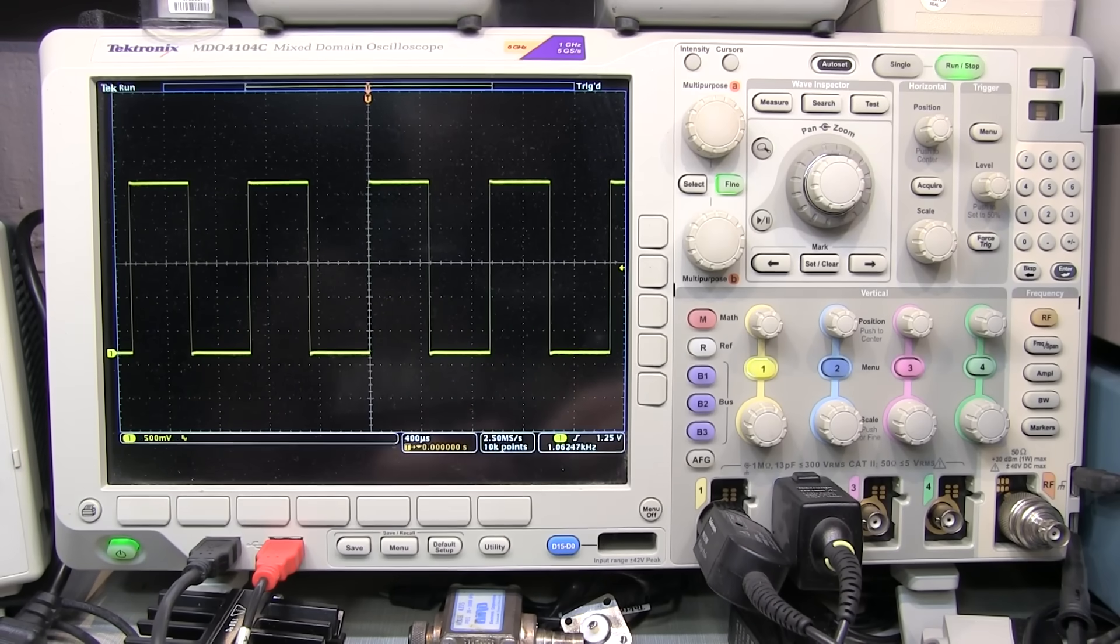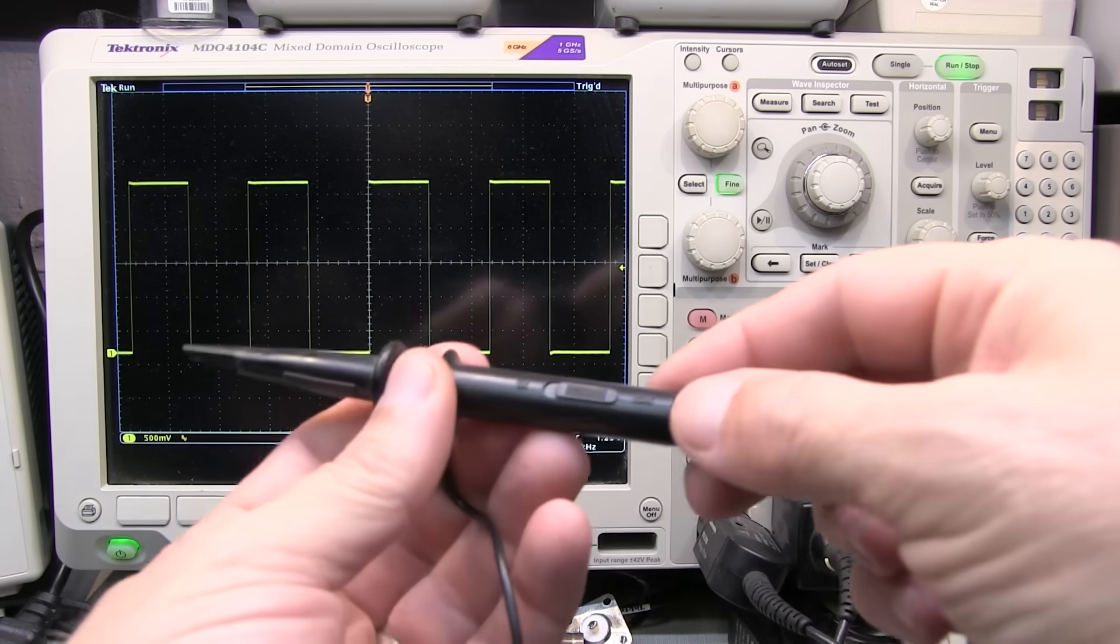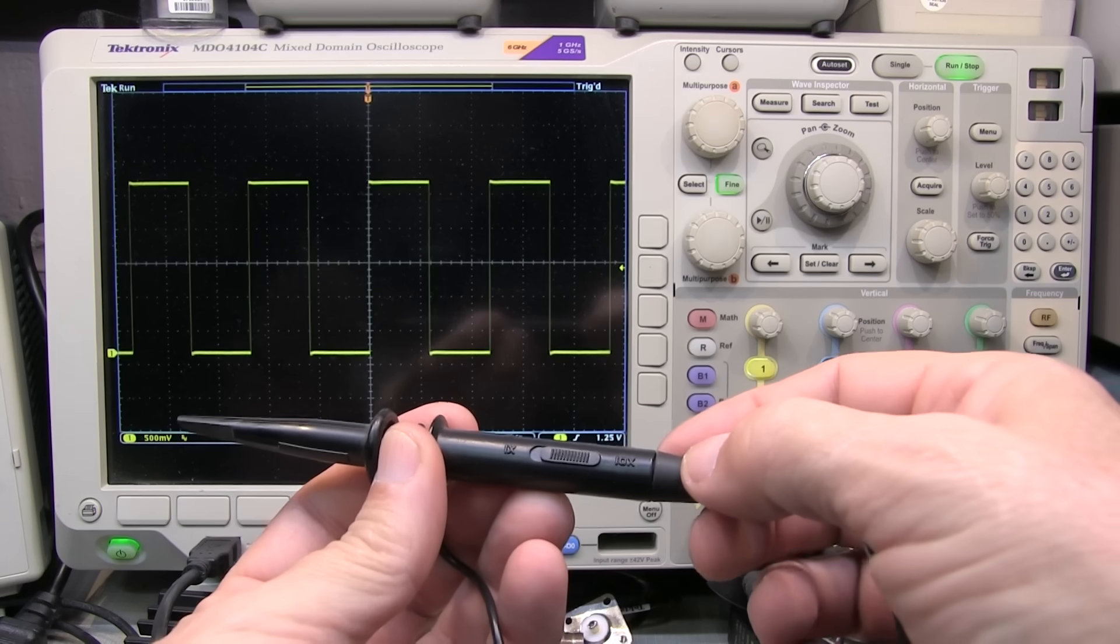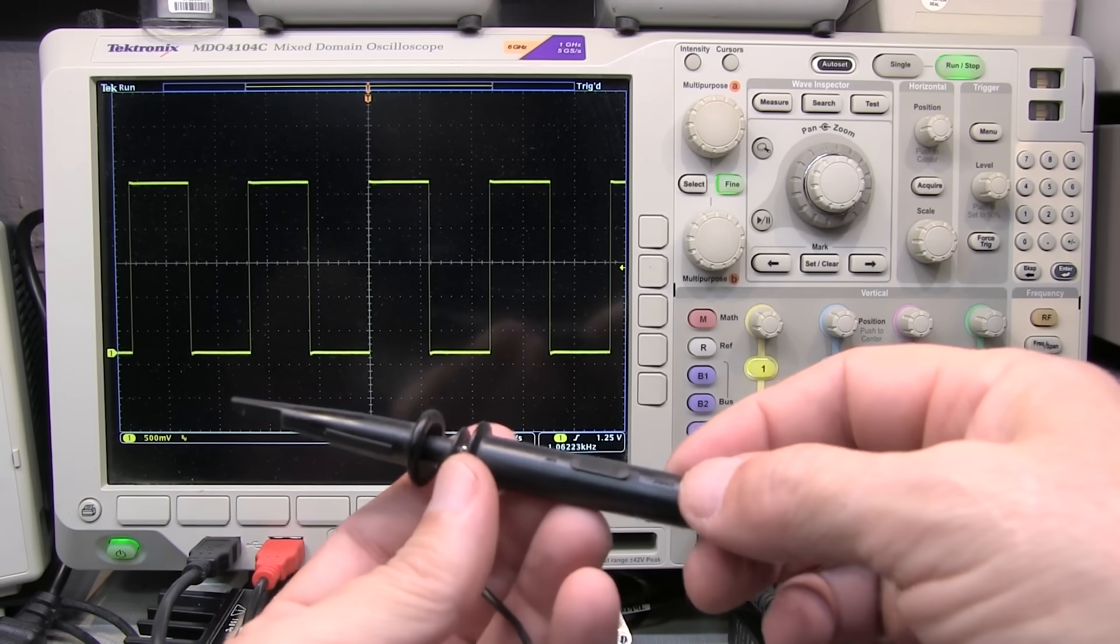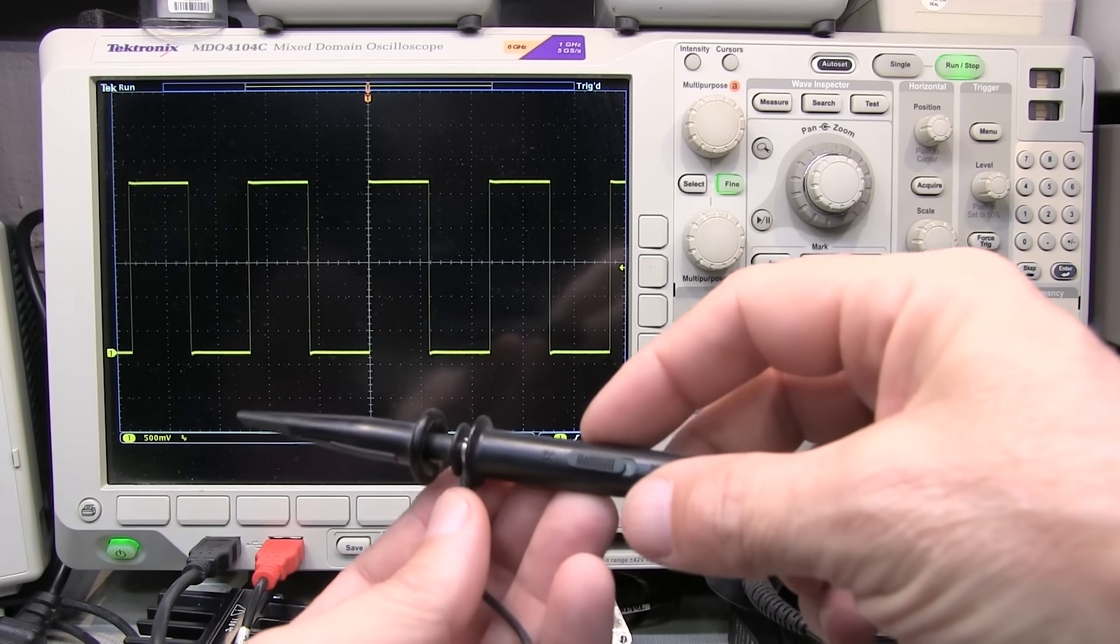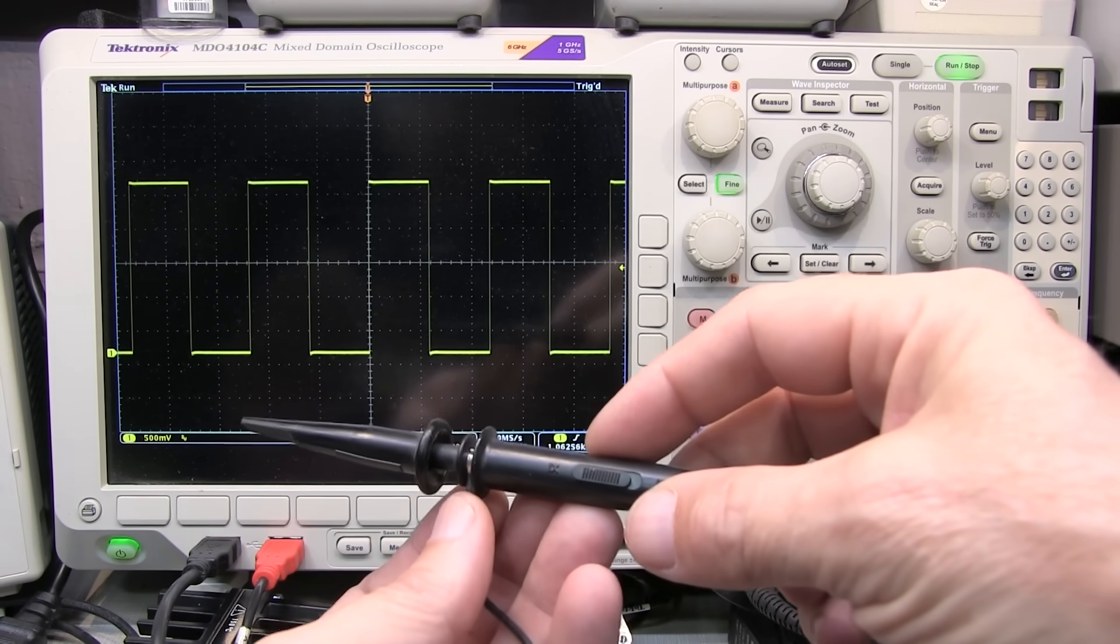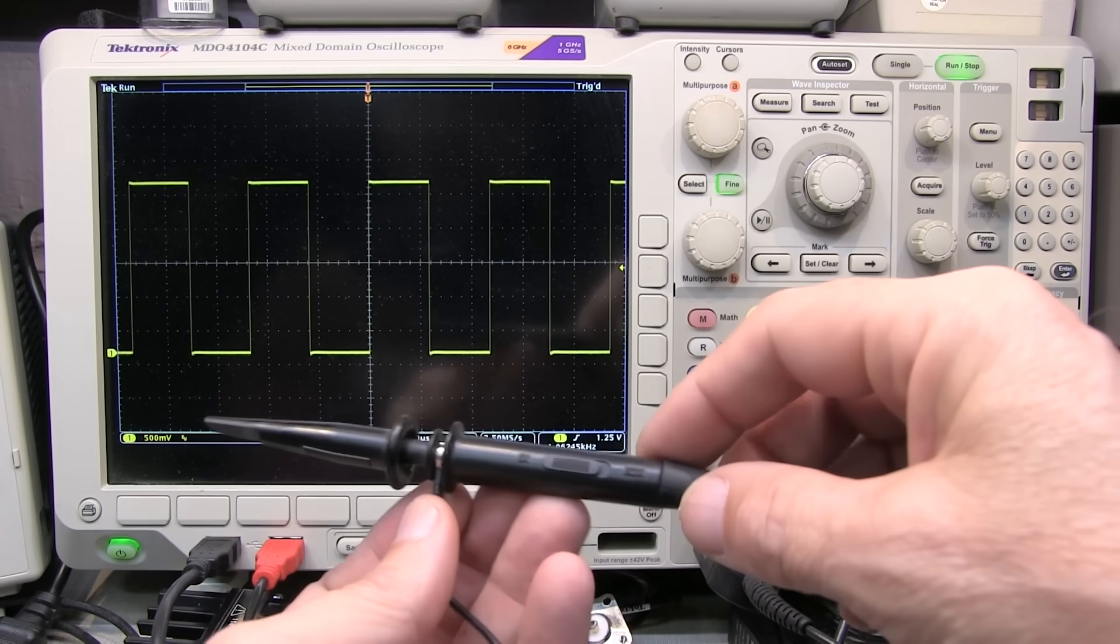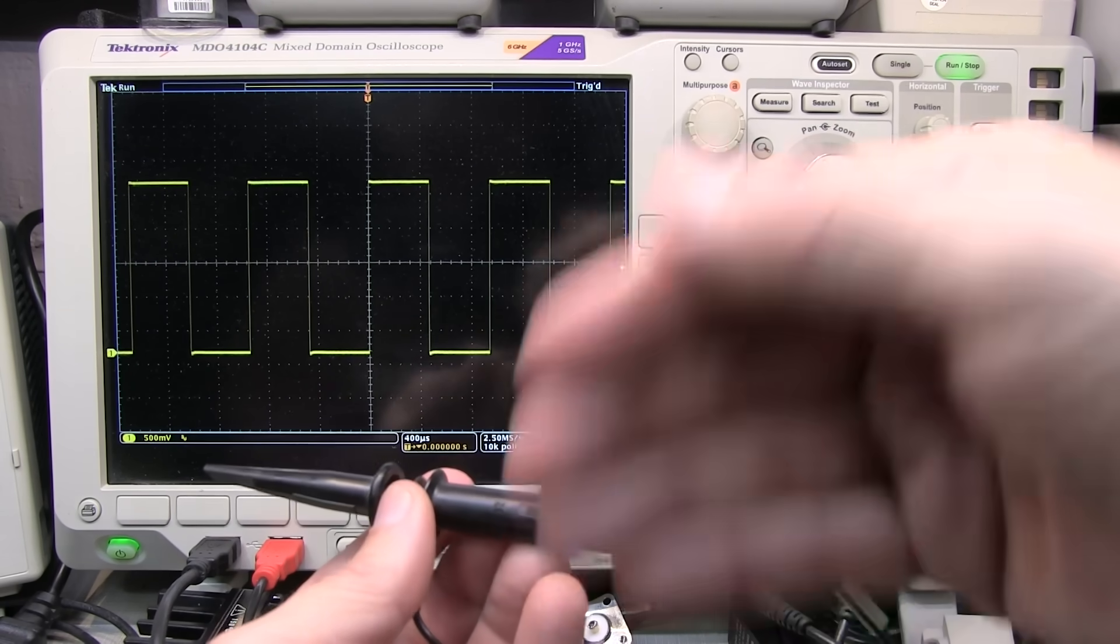Now while we're using 10x probes most of the time, sometimes that's not the most appropriate choice. There are probes that are switchable like this one here between 1x and 10x mode. Now the 1x mode might be important if you're looking at very low level signals. But it also means that those signals are going to have to be generally lower in frequency. Because that 1x probe is going to have a lot more capacitive loading and therefore is going to drive the bandwidth that you can measure with that probe down.